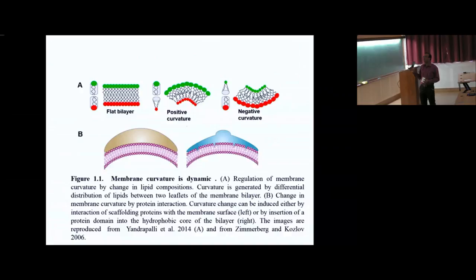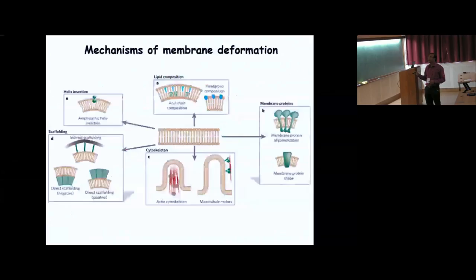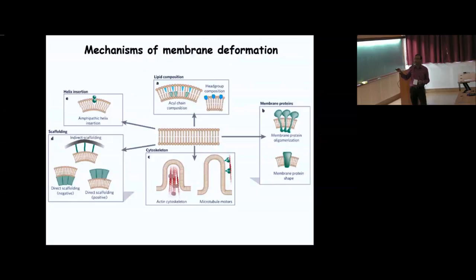There are also proteins which actually bring about curvature simply by interacting with the membrane. A protein structure which is curved will make the underlying membrane take the shape of that protein. It could be either by peripheral interaction or some proteins can get inserted inside the membrane and change its curvature. Various structures can be achieved by different proteins, like amphipathic helices which are present both inside the membrane and exposed to the surrounding material — this makes a kink that produces curvature.